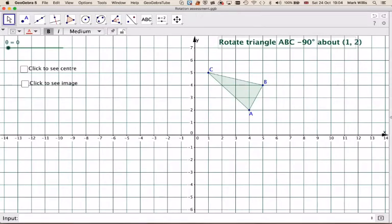Okay, in this question we're asked to rotate this shape A, B and C, minus 90 degrees about the point 1, 2. First of all we need to locate the point 1, 2, so it's 1 along and 2 up, so it's going to be that point there.